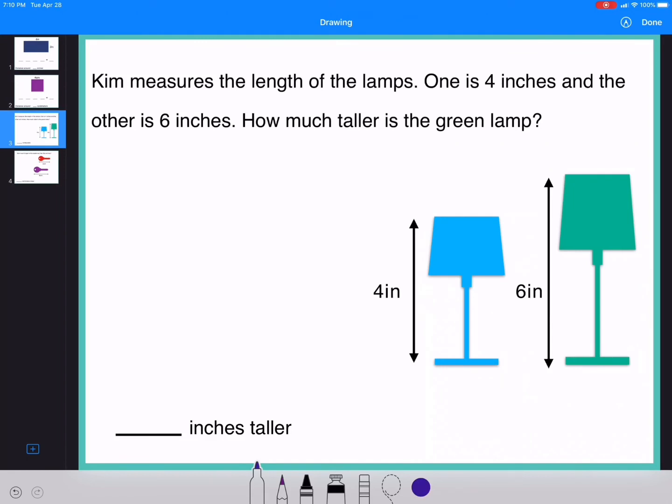So the second part of this lesson is going to be talking about is something is taller or shorter or longer. All of those words tell us that we need to subtract this time. My sentence says, Kim measures the length of the lamps. One is 4 inches and the other is 6 inches. How much taller? How much taller is the green lamp? Okay, let's look.